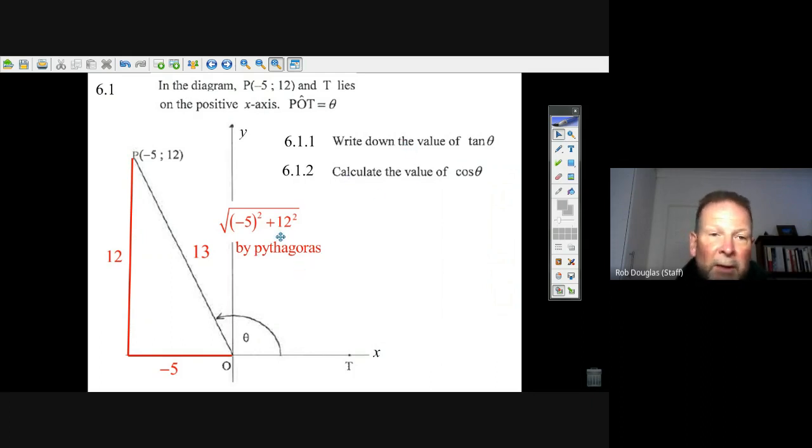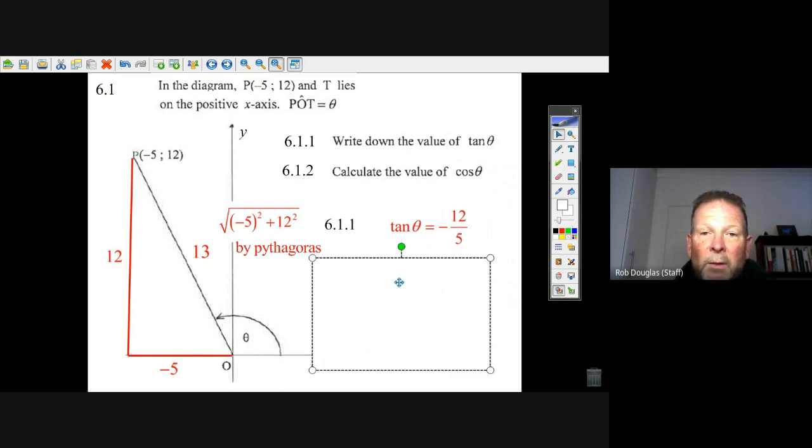Now, doing the next part, the tangent of theta, you could have got, this is rise over run, it's just 12 over minus 5. You could have got that right off the bat without using any diagram. But the next question, and in fact, that's why I only call it one mark, why they only give one mark for it.